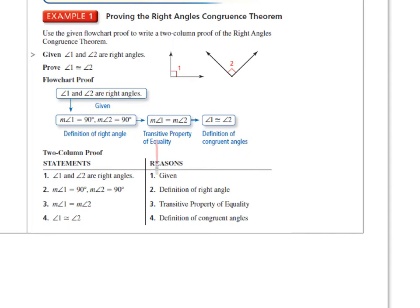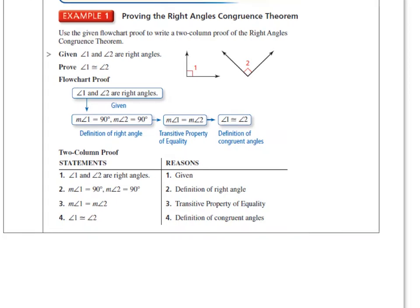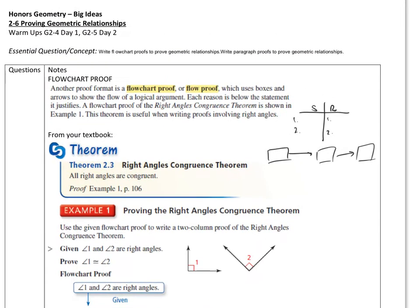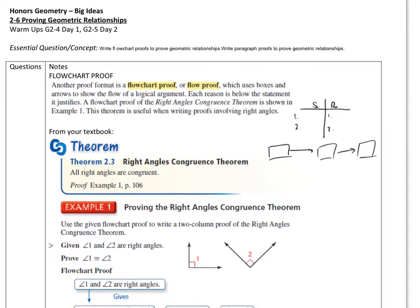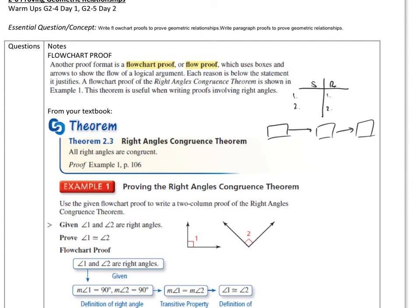Some teachers really like flow chart proofs. I think you guys tend to do a little bit better with just writing it out as a logical two-column proof. So let's take a look at the next page, and then we could do proofs through flow chart proofs and practice various ones like that. Thanks for watching — hit that like and subscribe button, and I'll see you guys in the next video.